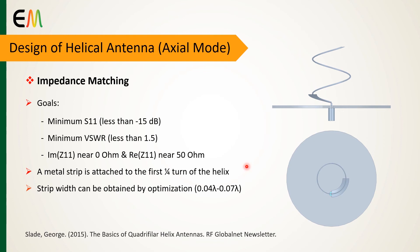One of the simplest techniques for the impedance matching of the helical antenna is modifying the feed with a wide strip that acts as a wideband impedance transformer. This strip is attached to the first quarter turn of the helical antenna, and the strip width can be obtained by an optimization process during full-wave simulation. This strip forms a tapered transmission line transformer that provides the necessary frequency-independent match between the helix and the 50 ohm source.